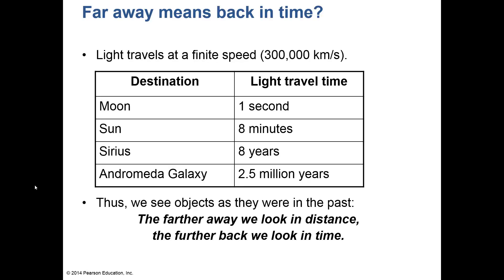Let's look at some time scales. Light travels very fast — 300,000 kilometers per second, or about 186,000 miles per second. A light ray can circle the earth seven times in one second. To get to the moon, light takes just one second. To get to the Sun, light takes eight and a half minutes. So when you look at the Sun, you're seeing it as it was eight minutes ago — we don't see it in real time.